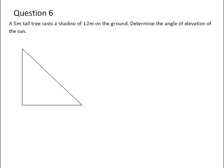Question 6. A 5 meter tall tree casts a shadow of 12 meters on the ground. Determine the angle of elevation of the sun. So this is a slightly tricky question, but if we just start with our basic idea.